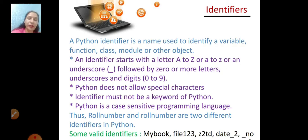The rules are: first, an identifier starts with a letter A to Z or a to z, or an underscore, followed by zero or more letters, underscores, and digits from 0 to 9.